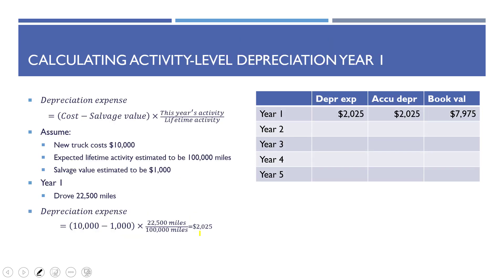Another method is called activity level depreciation. Instead of depreciating over time, you depreciate over activity. The formula is: (cost minus salvage value) times (this year's activity divided by expected total activity over the asset's lifetime). For example, a new truck costs $10,000, is good for 100,000 miles, and has a salvage value of $1,000. In year one, if we drove 22,500 miles, depreciation expense is ($10,000 minus $1,000) times (22,500 divided by 100,000), giving $2,025. Accumulated depreciation is $2,025 and book value is $7,975.